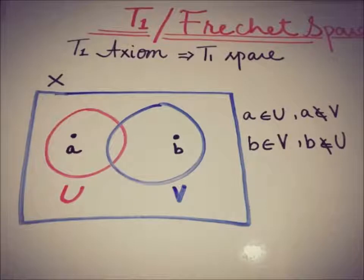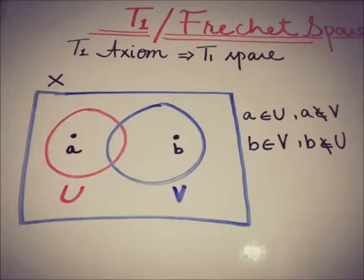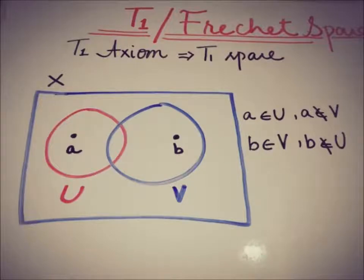This implies that every T1 space is a T0 space. But what about the converse — is every T0 space also a T1 space? The answer is no. Every T0 space cannot be a T1 space, and we have a counter-example: the Sierpinski space, which was also discussed when talking about the T0 space.